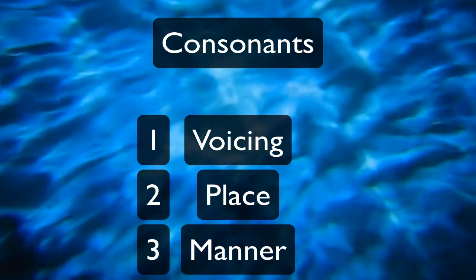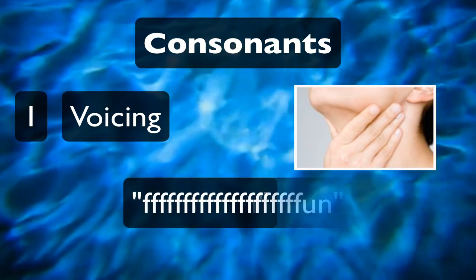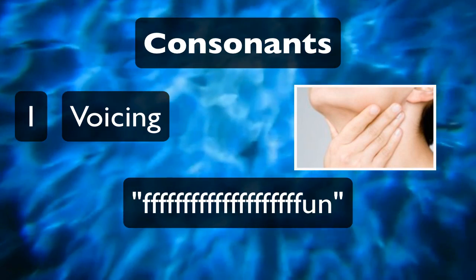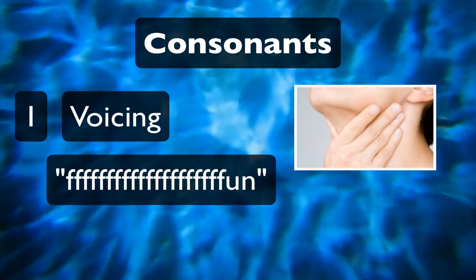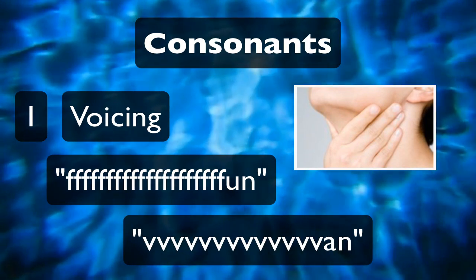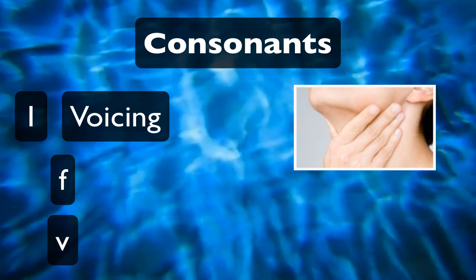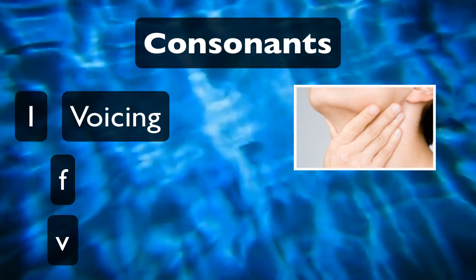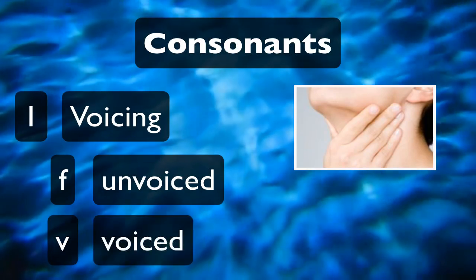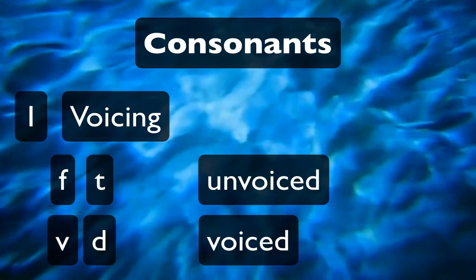Voicing is perhaps the simplest. Put your hands on your throat and say 'fun', but stay on the F — go 'ffff-fun'. Do you feel anything at your throat? You shouldn't. If you were to compare that with 'van', for example, and you stay on the V — 'vvv' — your hand should feel buzzing in your throat. F and V are a pair of consonants that are identical except for that buzzing in your vocal cords. F is known as an unvoiced consonant, and V is known as a voiced consonant. Most consonants in English come in voiced-unvoiced pairs, like T and D, and B and P.